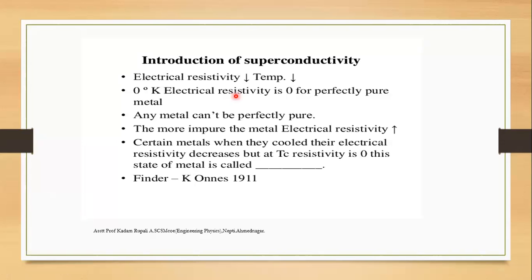In that condition — meaning superconductivity — at 0 degrees Kelvin, electrical resistivity is zero for perfectly pure metals. Any metal cannot be perfectly pure in form. Simply, superconductivity means at a certain state.